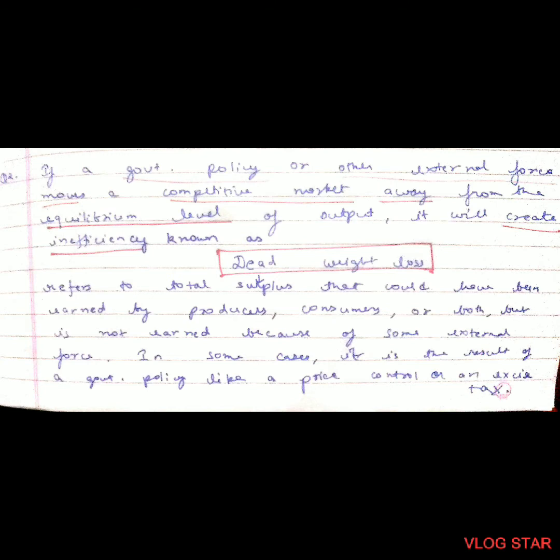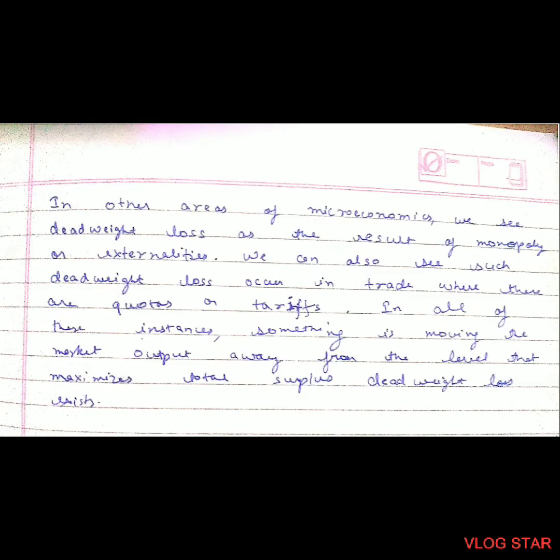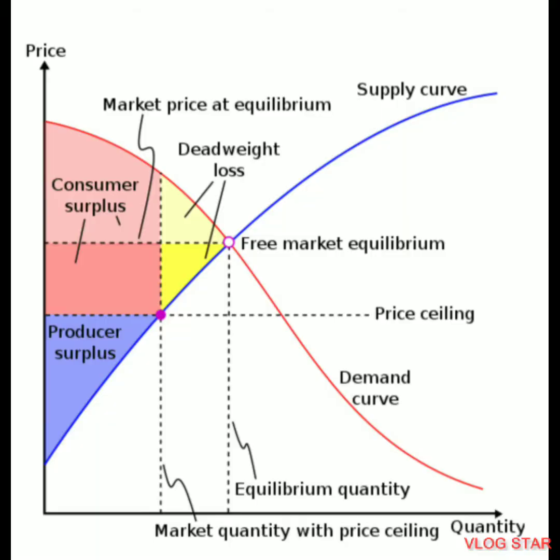Deadweight loss refers to total surplus that could have been earned by producers, consumers, or both, but is not earned because of some external force. In some cases it results from a government policy like a price control or excise duty. In other areas of microeconomics, deadweight loss results from monopoly or externalities, and in trade it occurs due to quotas or tariffs. In all these instances, something moves market output away from the level that maximizes total surplus. The deadweight loss is shown as the yellow area on the graph.